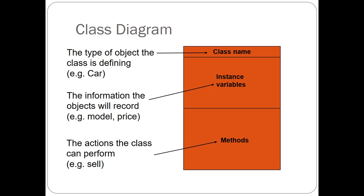You can generate these electronically using drawing tools in Word, online tools like Lucidchart, or Microsoft Visio. Basically they're just three rectangles stacked on top of each other, but you have to put the right information into the right boxes. A typical class diagram has the name of the object in the top box, the middle box contains all of the information about that particular object — we call them instance variables — and the bottom box contains things called methods.